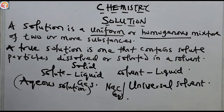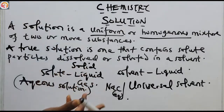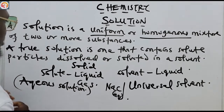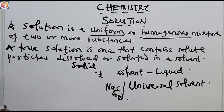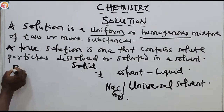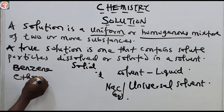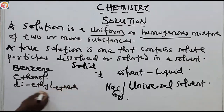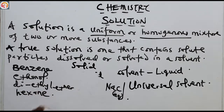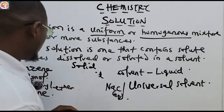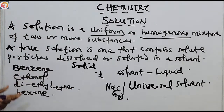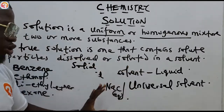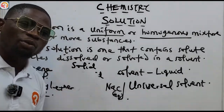Other solvents besides water include ethanol, which is polar like water, benzene, diethyl ether, and hexane. All of these are examples of solvents. So water, ethanol, benzene, diethyl ether, and hexane are all examples of solvents.